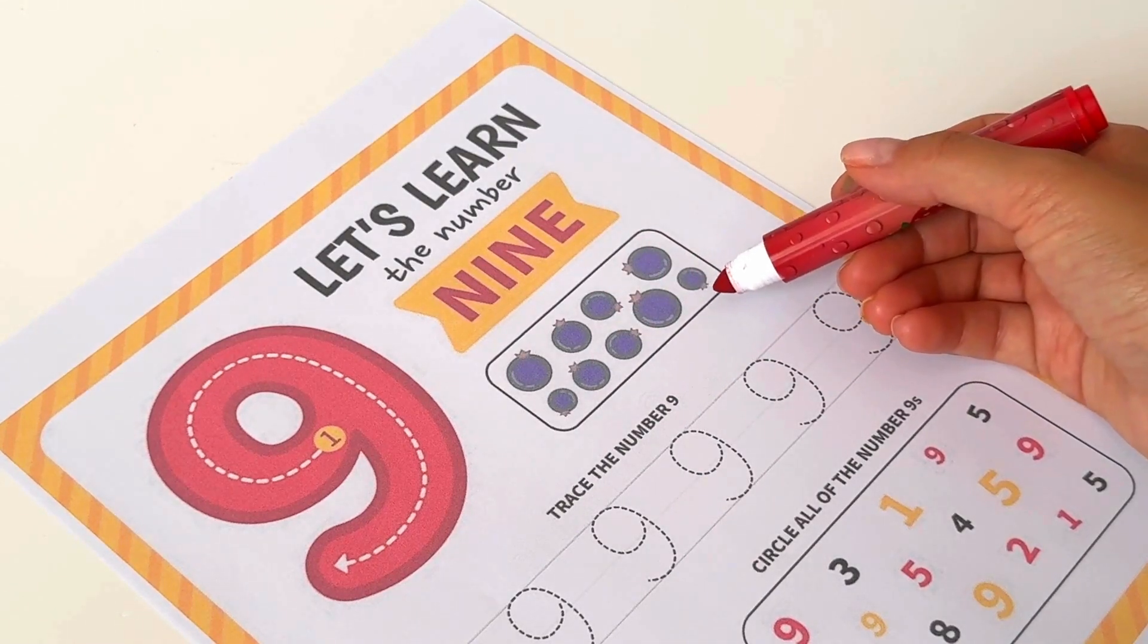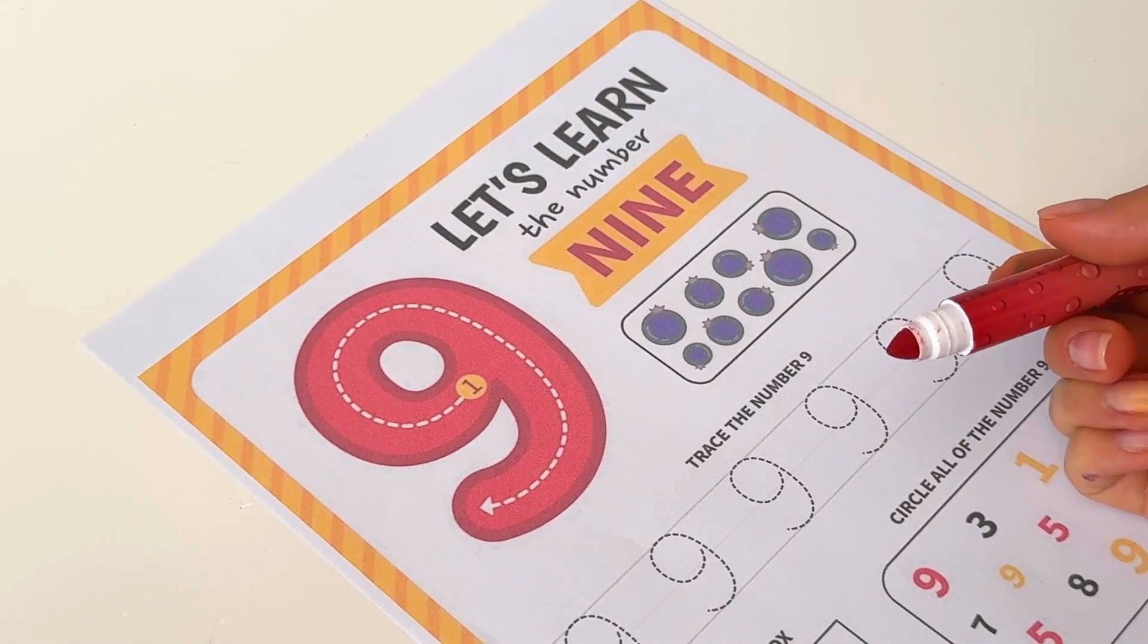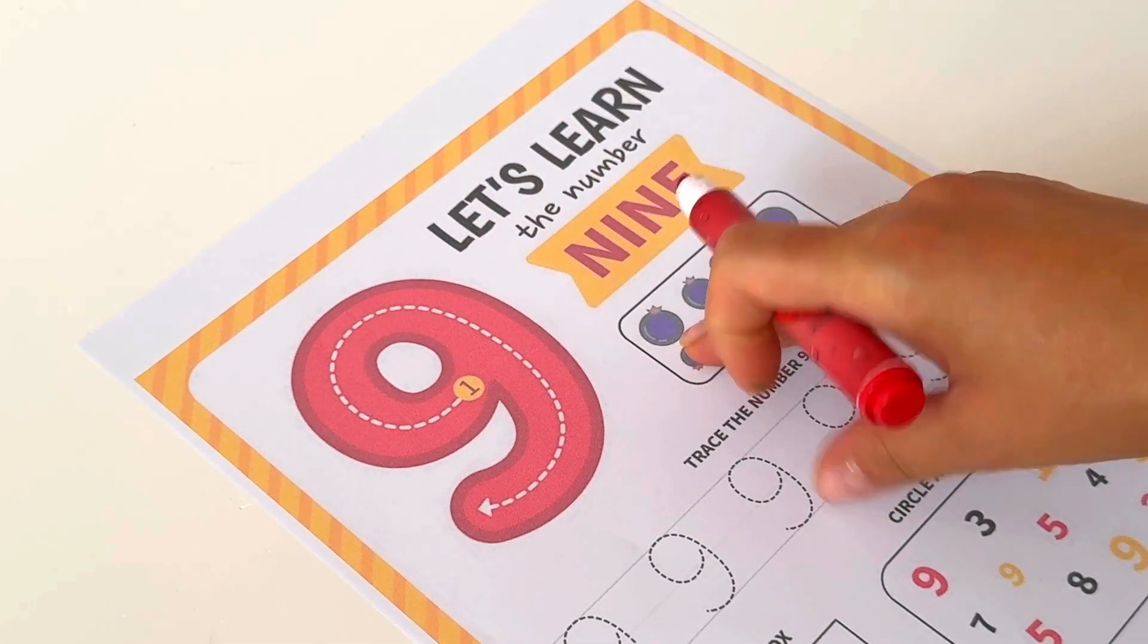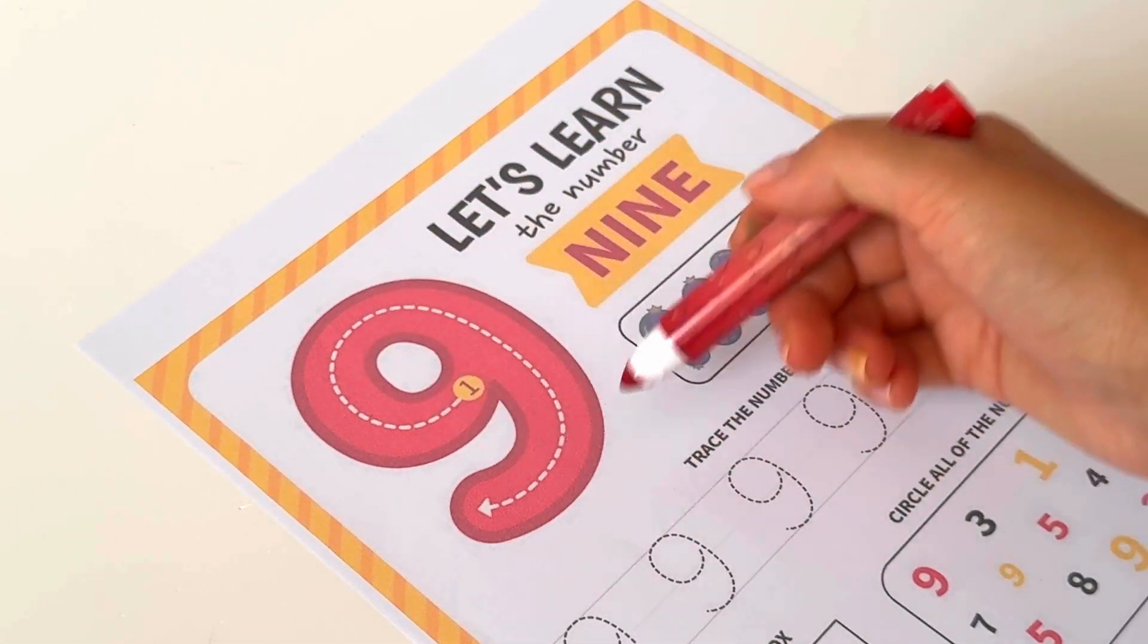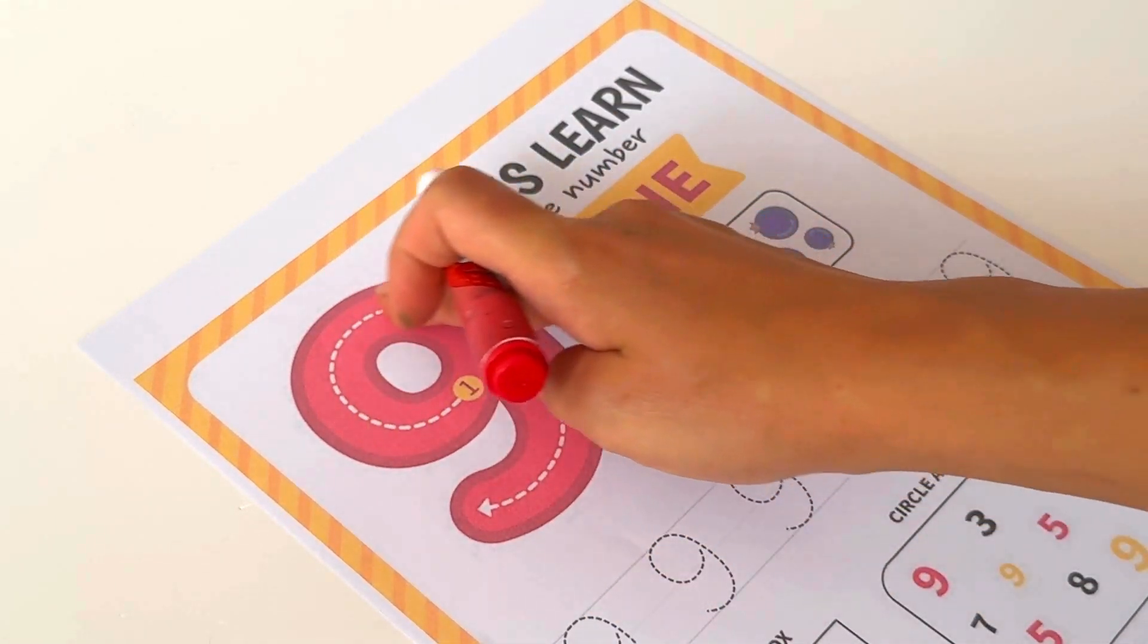Now let's see how we can trace number nine. It looks like number six but it's upside down. You know number six is like this, the bubble is down, and with number nine we have this bubble, this circle, up here.